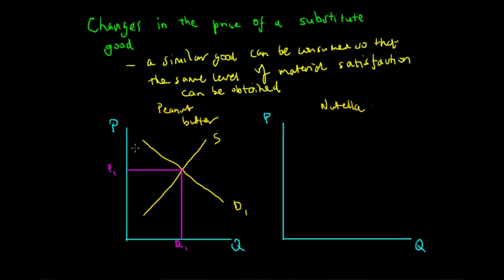Assuming for whatever reason the price of peanut butter increases to P2, the quantity demanded at P2 would decrease to Q2.